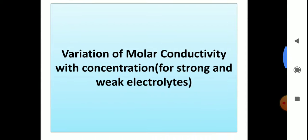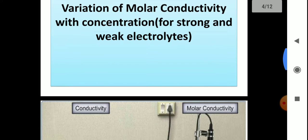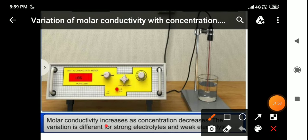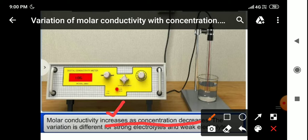The next topic is variation of molar conductivity with concentration for strong and weak electrolytes. We study both separately: how does their molar conductivity vary when we decrease or increase concentration? Molar conductivity increases as concentration decreases. Strong electrolytes are those which dissociate completely, but weak electrolytes are those which dissociate to a smaller extent. This is why both variations are different.